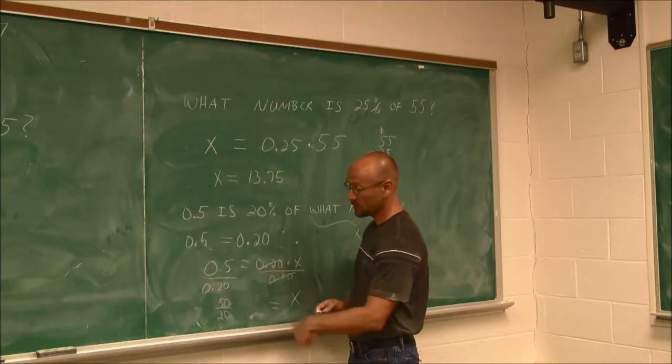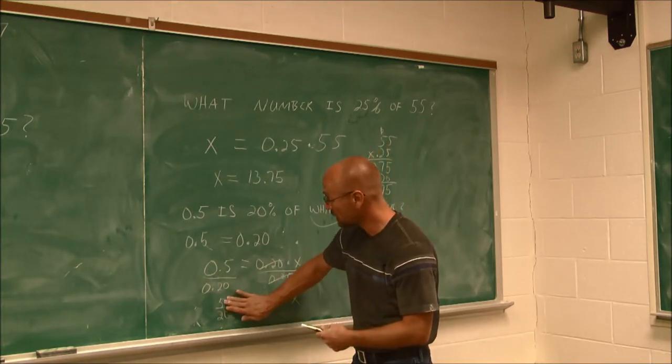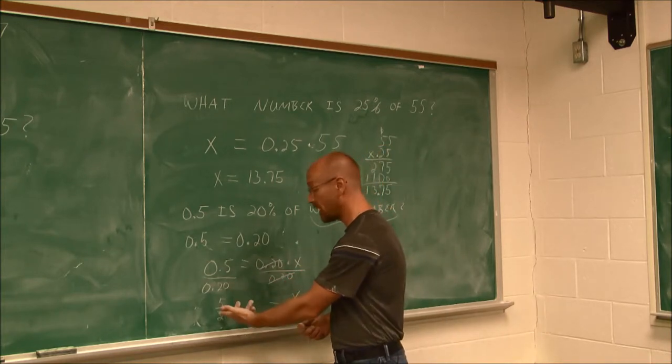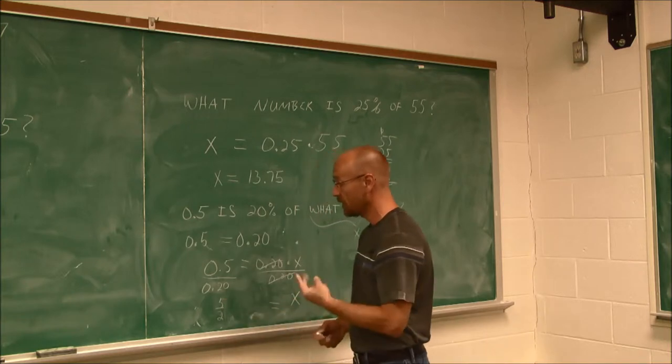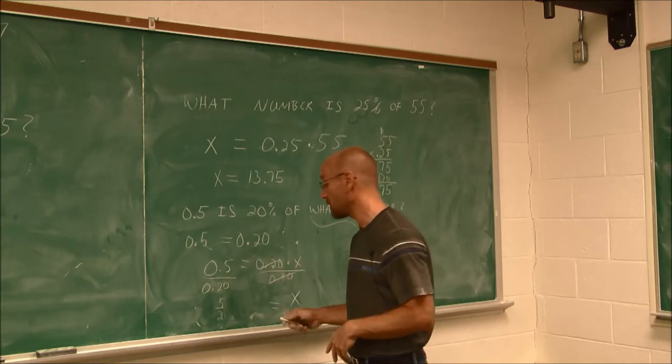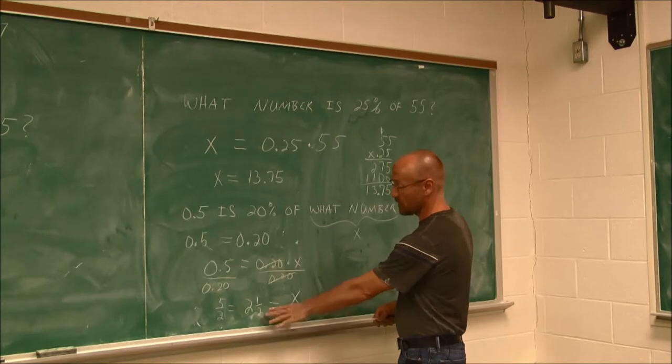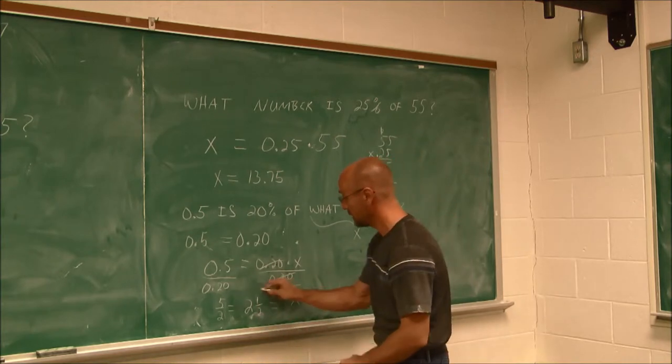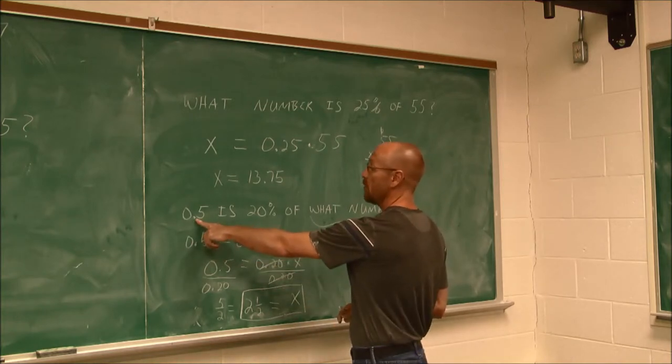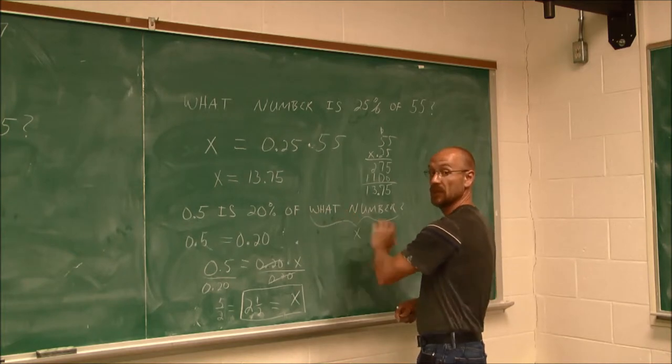And now we can actually do this division. Maybe I want to reduce it first. I see, OK, they're both divisible by 10. So I have 5 halves. And what is 5 halves? Well, 2 goes into 5 twice with a remainder of 1. So I'd have 2 and 1 half. Maybe I want to leave it as a mixed number. That's OK, too. So if I reread the question with this answer, because x is 2 and 1 half, or we could say 5 halves. You can leave it either way. 0.5 is 20% of 2 and 1 half. That's the number we found.